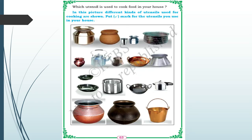Which utensils are used to cook food in your house? A tumbler is used for storing water, and a pot was used for cooking in olden days but is not commonly used now. A glass is for drinking water. A vessel and a pan can be used for cooking, and a cooker is also used. Some utensils here are used for coffee or tea preparation, while others are for storing water or eating food.